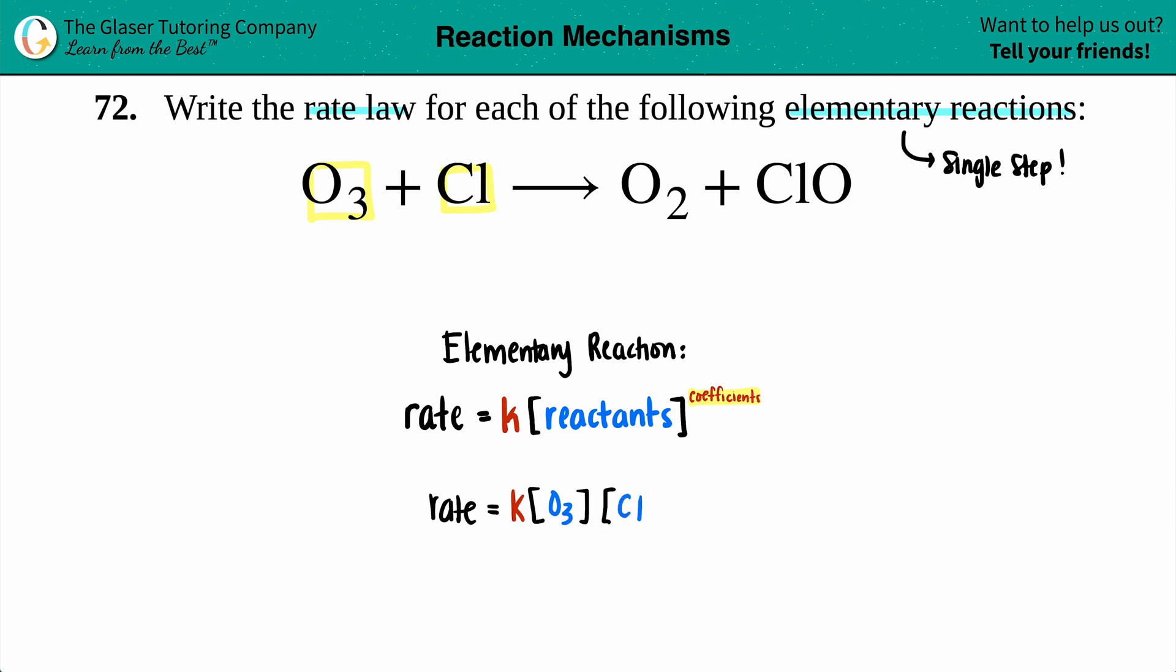Okay, reactants are done. Now all we have to do is raise them to the coefficients. O3—there was one O3, so I could put a one here, but you don't have to if you don't want to.